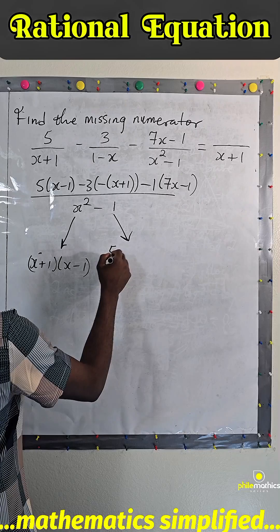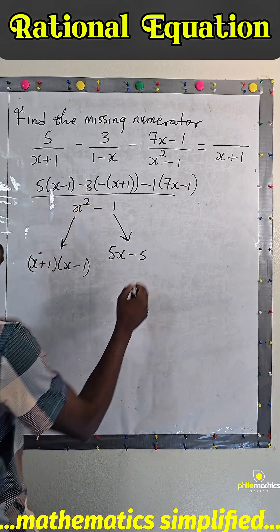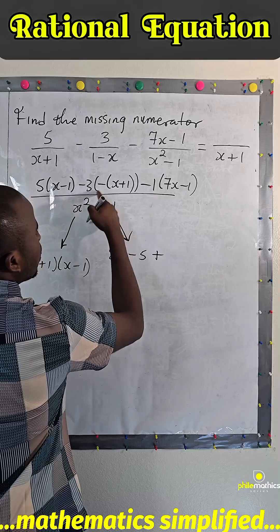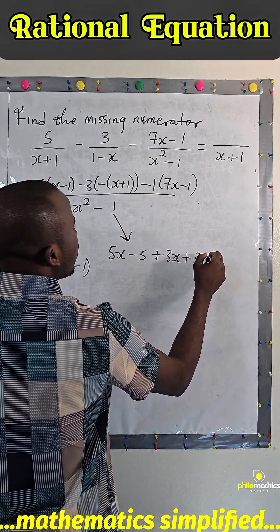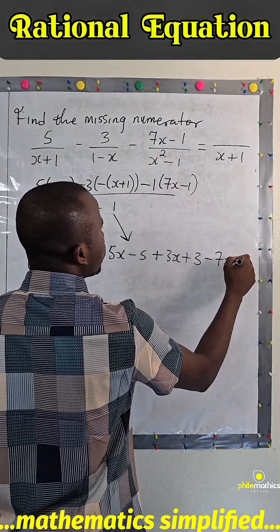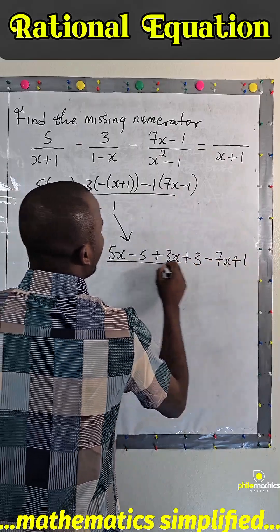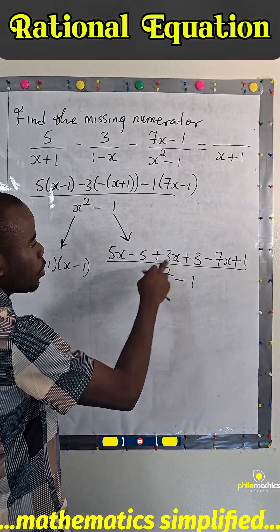Open bracket to have 5x - 5. Minus times minus is plus, so plus 3x plus 3, minus 7x. Minus minus is plus, plus 1 over x² - 1. 5s plus 3s